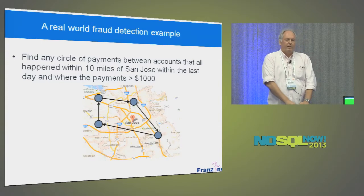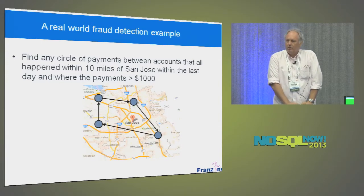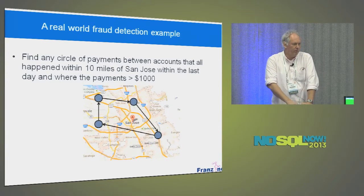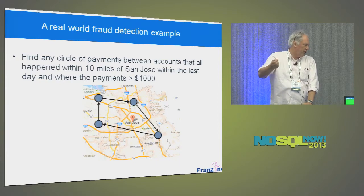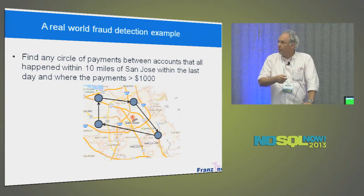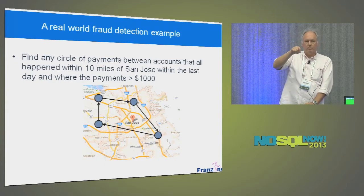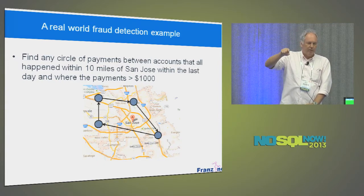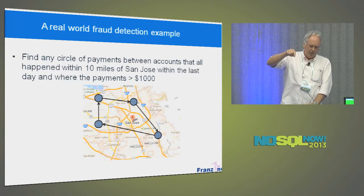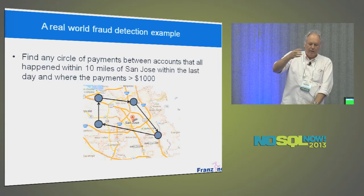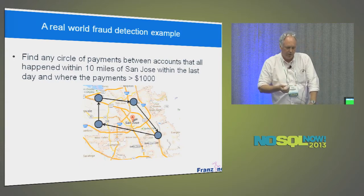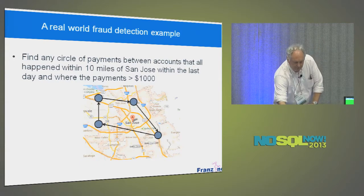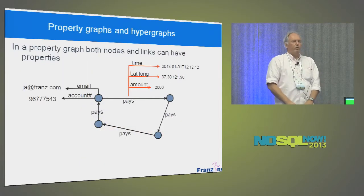We're doing a project for a big bank that saves the bank about 30 million dollars a year in fraud detection, where we look at all kinds of interesting patterns that might indicate collusion or other fraud. One query could be: find a circle of payments within 10 miles of San Jose, within the last day, where payments are more than a thousand dollars. So you mix geospatial, temporal, and all these other things.